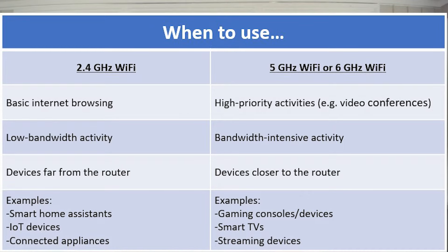On top of that, if you are close to your router, you might want to use these higher frequency networks because you'll be getting a maximum connection. Conversely, with a 2.4 GHz network you can access that farther away. So if you're further away from your router, you might want to use the 2.4 GHz network. Some other use cases: connected smart devices in your home don't usually require a lot of bandwidth. If you have a smart device, if you're just doing basic internet browsing, or you're far away from your router, those are all scenarios where a 2.4 GHz network makes sense.